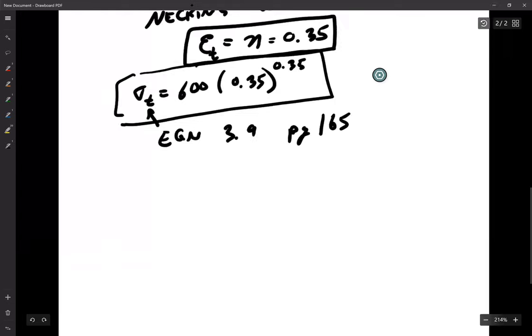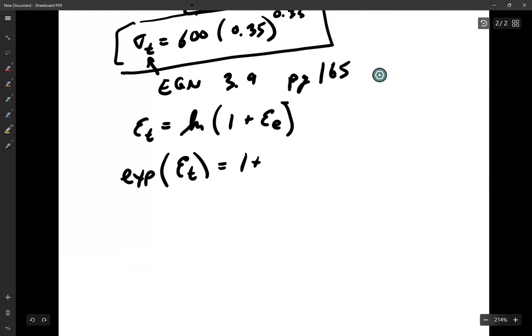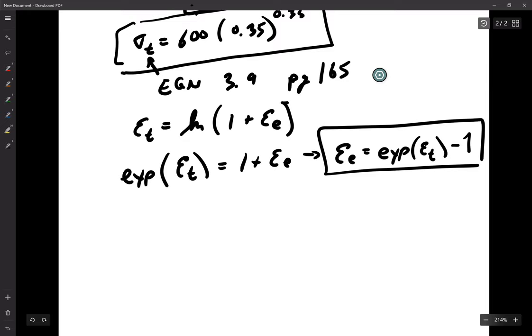And then we have, sorry, zooming. We have Epsilon E. So, we can say e to the true strain is equal to 1 plus Epsilon E or the engineering strain is equal to e to the true stress minus 1. So, this will allow us to determine the engineering strain.